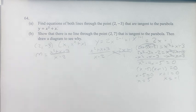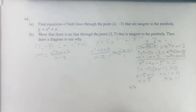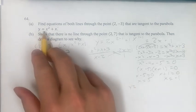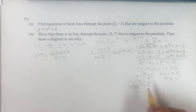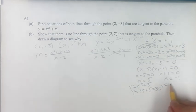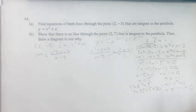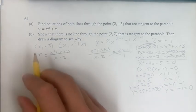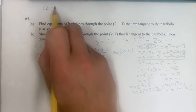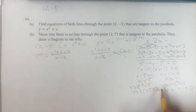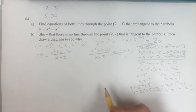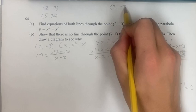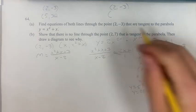These are the x values of the tangent points. For the y values, y equals x squared plus x. When x equals 5: 5 squared plus 5 equals 30. When x equals negative 1: negative 1 squared minus 1 equals 1 minus 1 equals 0. So our two tangent points are (5, 30) and (-1, 0).